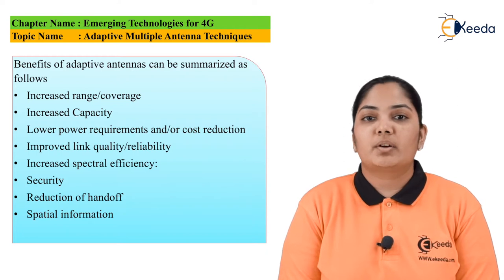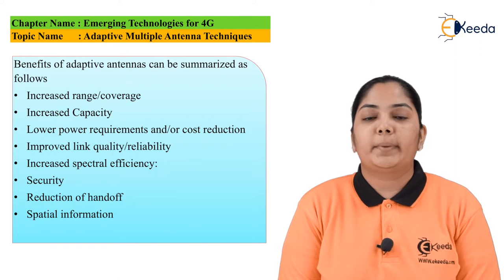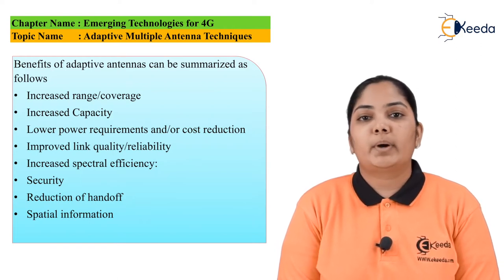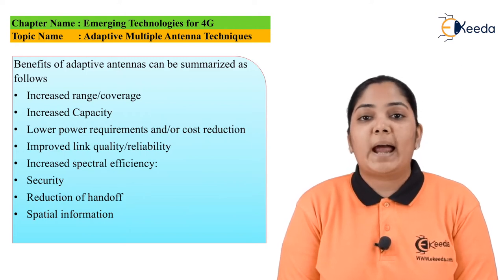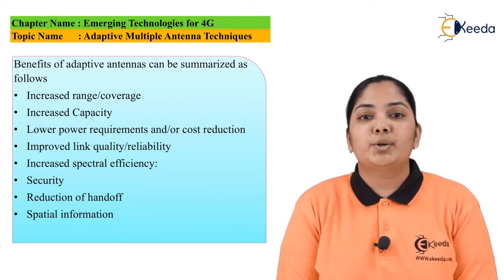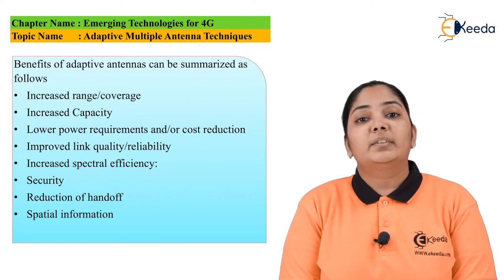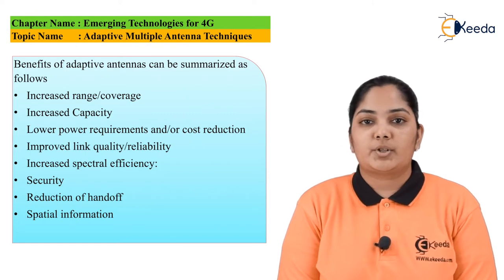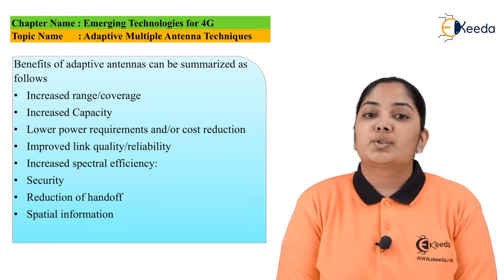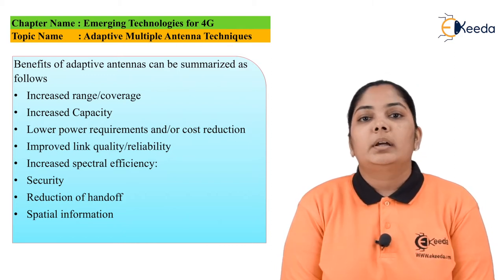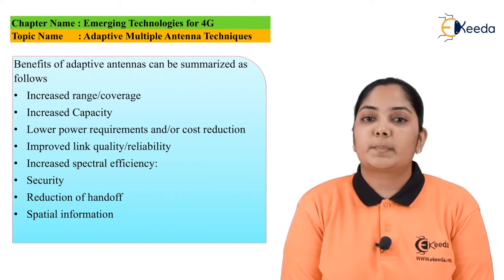The next advantage is reduction of handoff. Since extremely high capacity is provided by reducing signal-to-interference, there is no requirement of cell splitting. Because there is no cell splitting, the number of handoffs reduces greatly as there is a wider coverage area for the user to move. The final advantage is spatial information — the spatial information of the user is available at any point of time so that data is transmitted to the user, enabling location-based services.